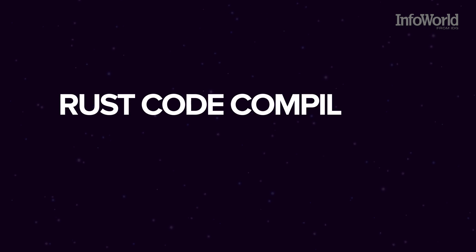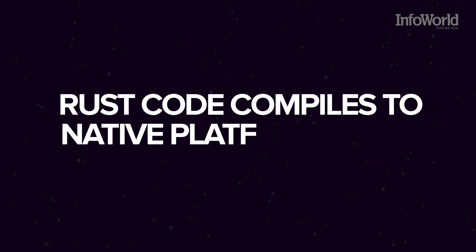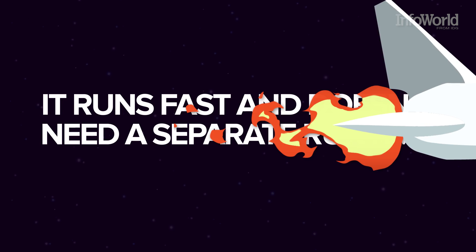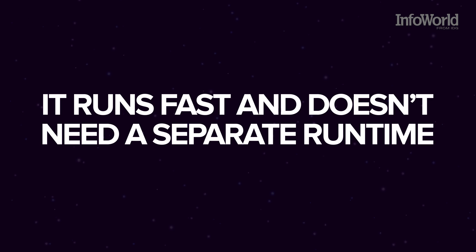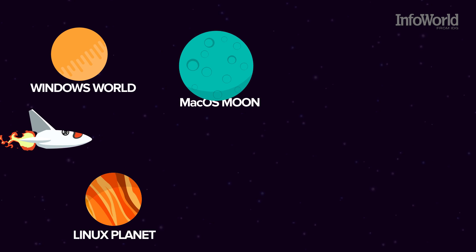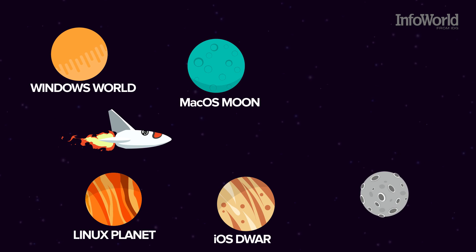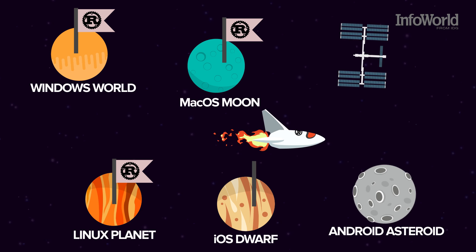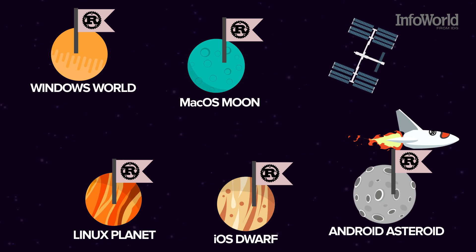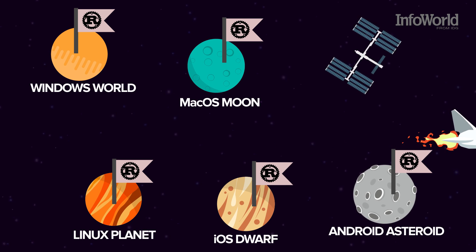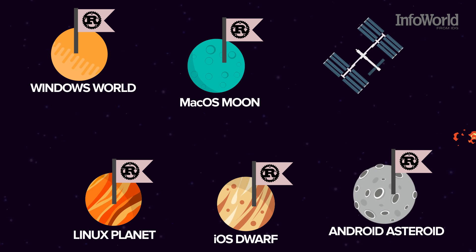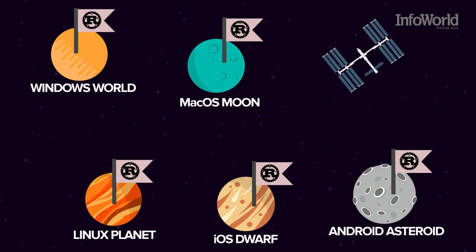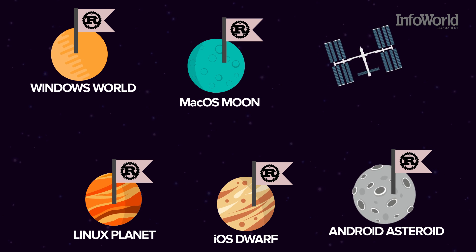Rust code compiles to native platform code like C or C++, so it runs fast and doesn't need a separate runtime. The Rust compiler can build binaries for Windows, Linux, macOS, iOS, and Android, so you can do your coding in any operating system you like and know the code will work on all the rest.